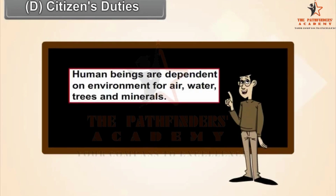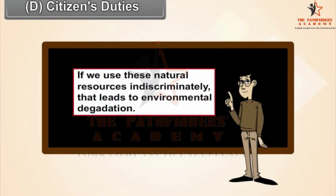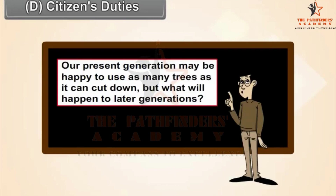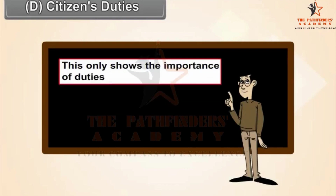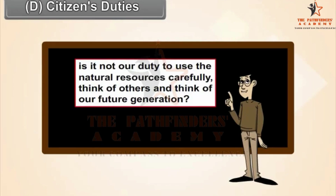Human beings are dependent on the environment for air, water, trees, and minerals. If we use these natural resources indiscriminately, it leads to environmental degradation. Our present generation may be happy using as many resources as possible, but what will happen to later generations? Over-exploitation of natural resources is already leading to crises such as drop in rainfall, rise in temperature, and many other environmental hazards. This shows the importance of the duty to use natural resources carefully and think of future generations.